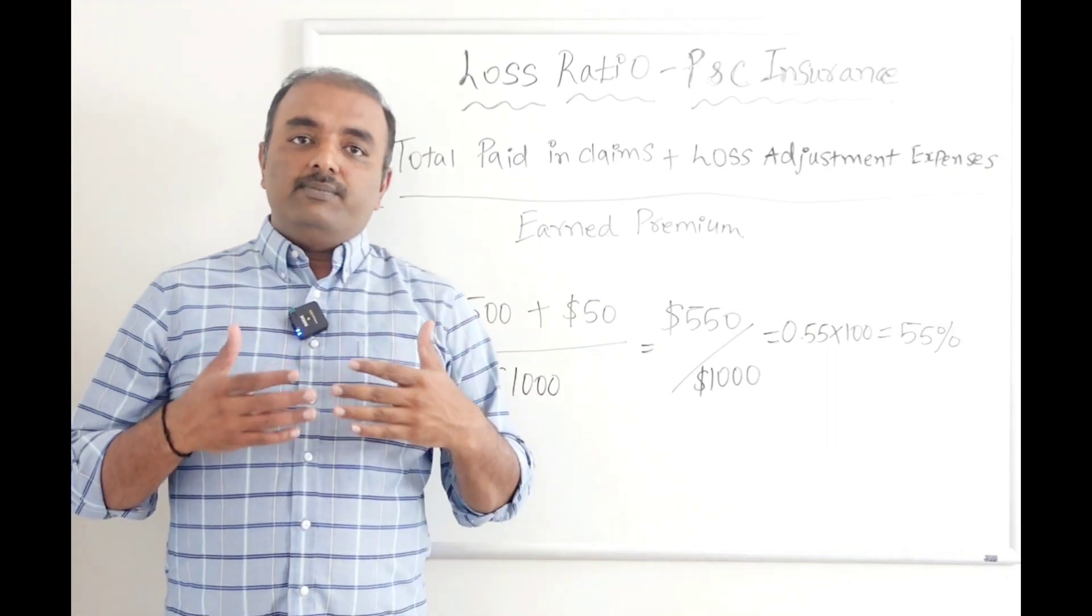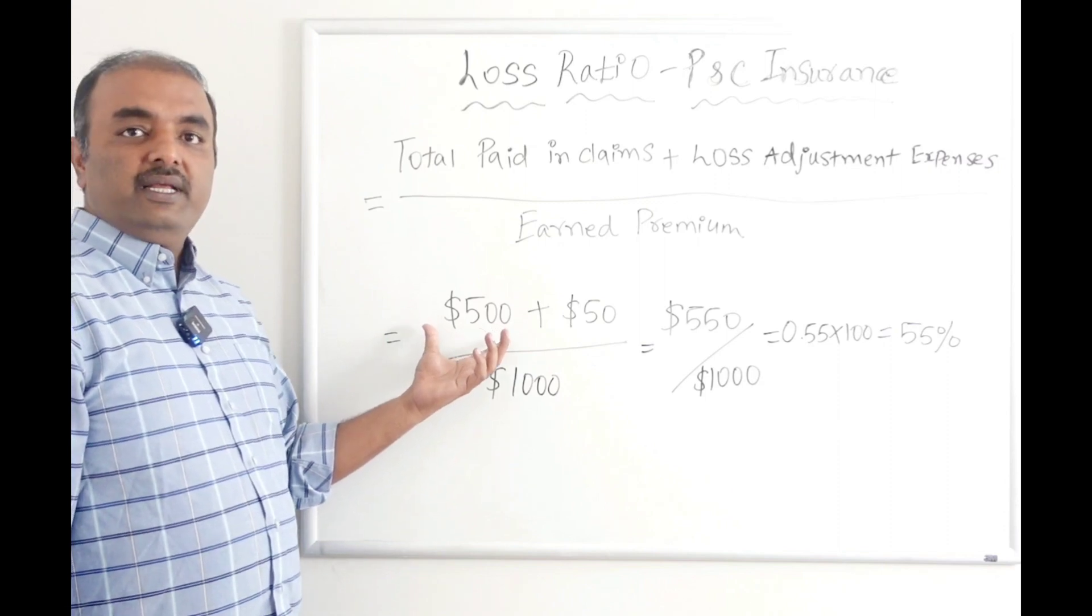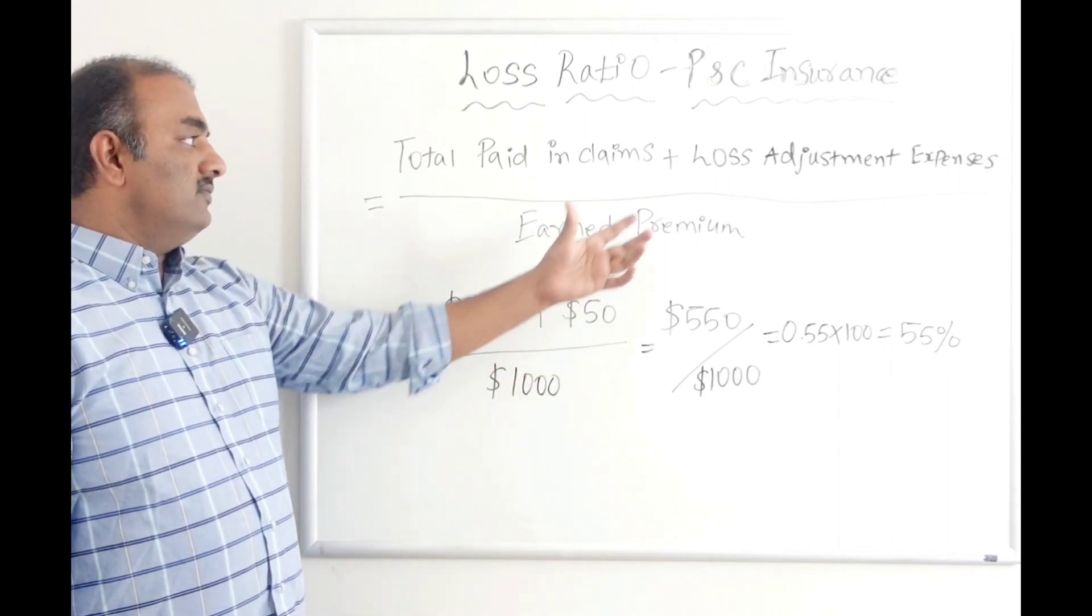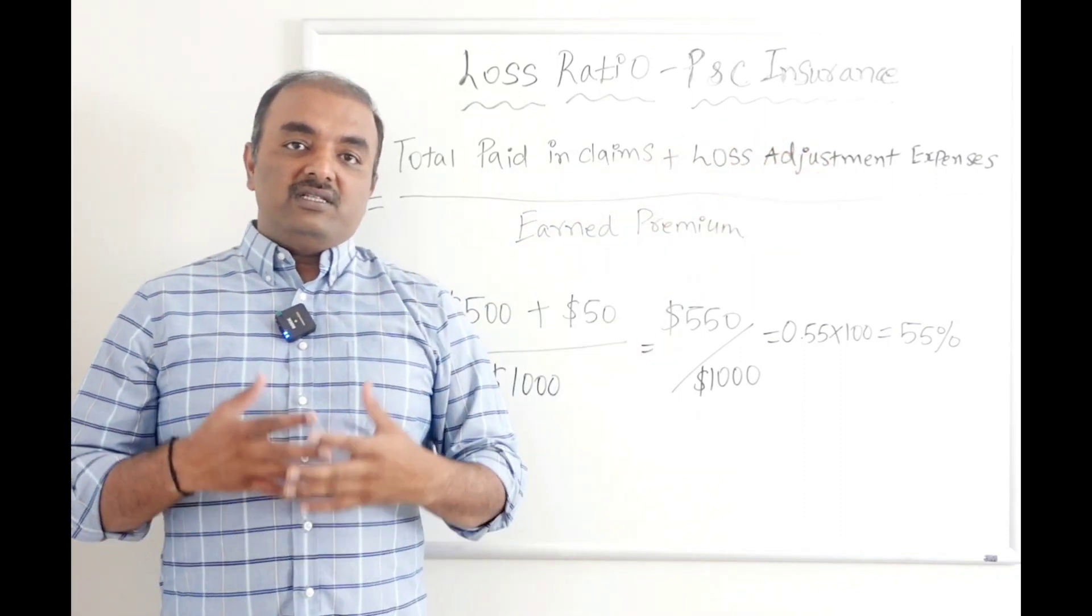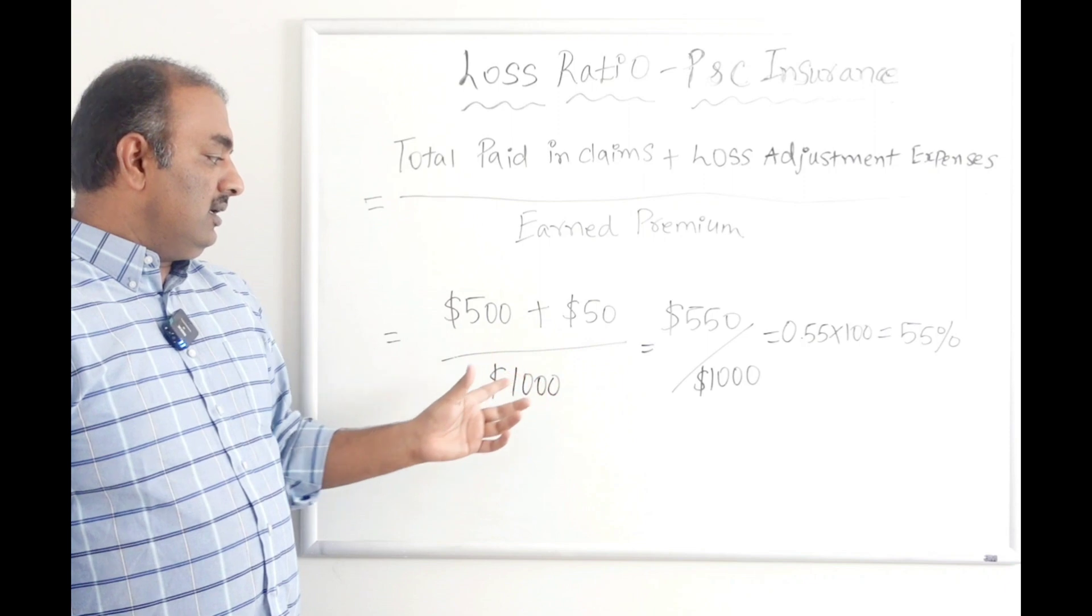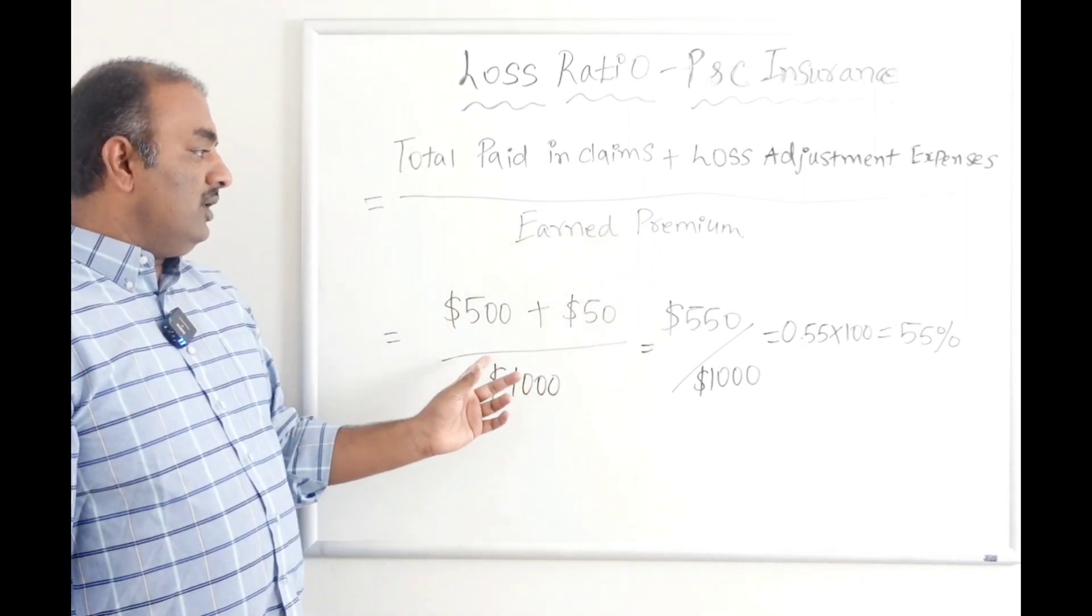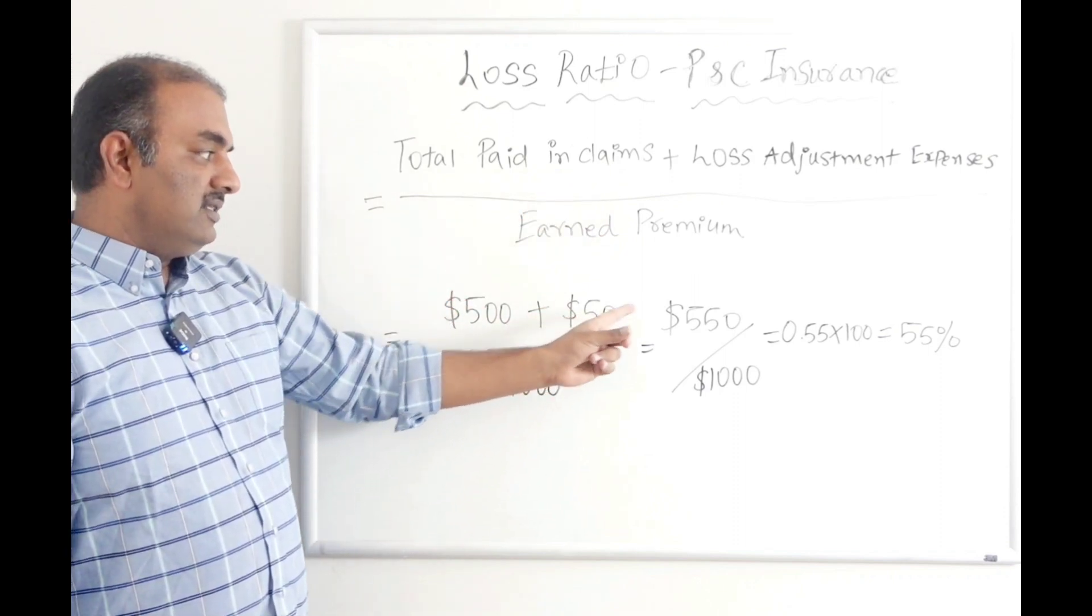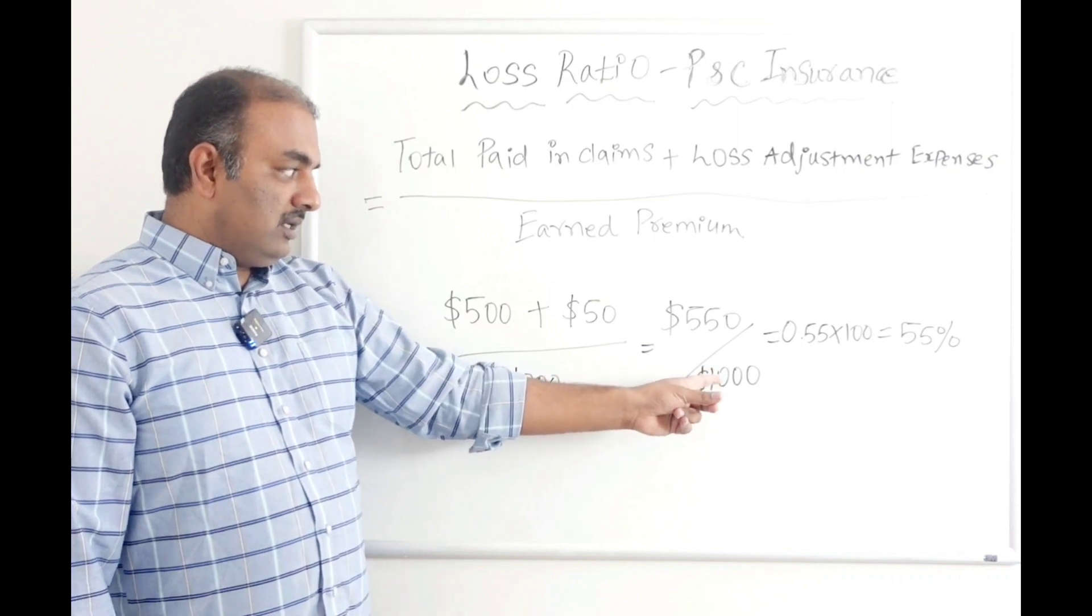If you take an example—I'm just taking a plain simple example—if we have paid overall $500 per year for the particular insurance company, and if the loss adjustment expenses, any claim handling fees or anything, comes to $50, and the overall earned premium is $1,000, now what you do as per this formula, you sum up $500 plus $50, which comes to $550, divided by the earned premium which is $1,000.